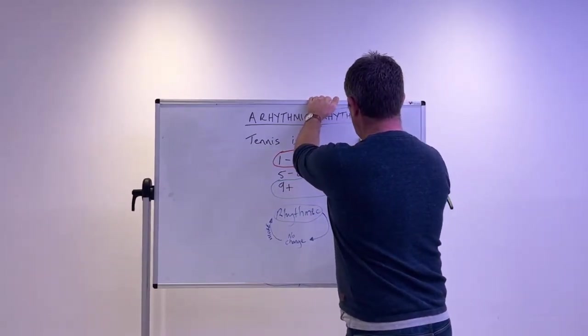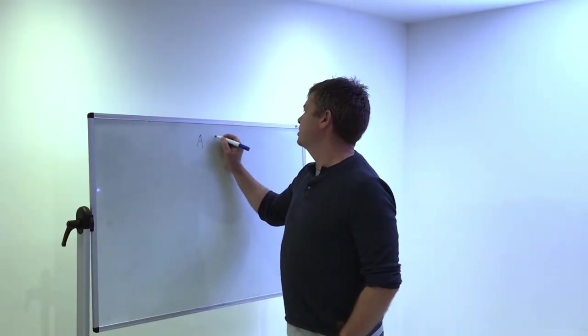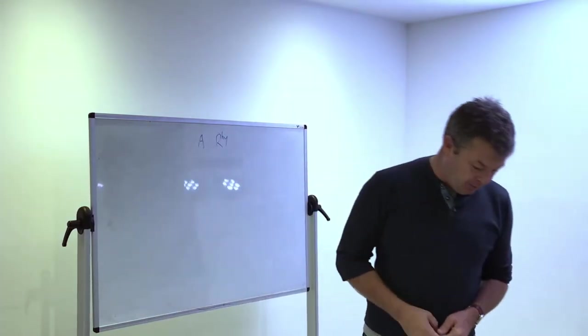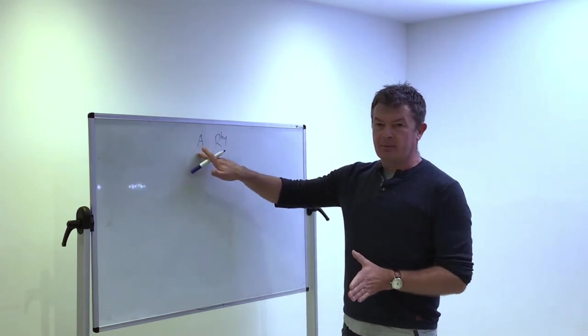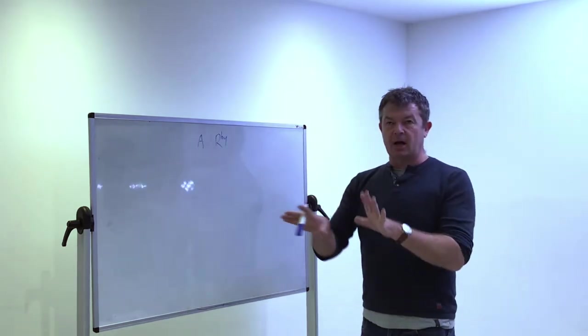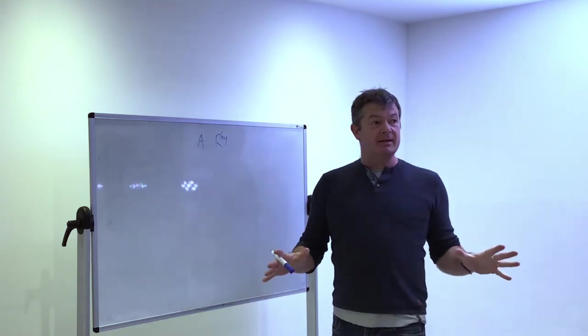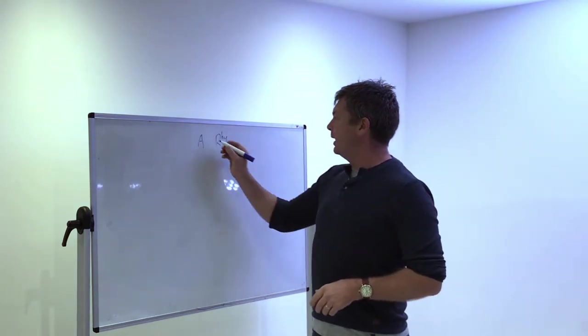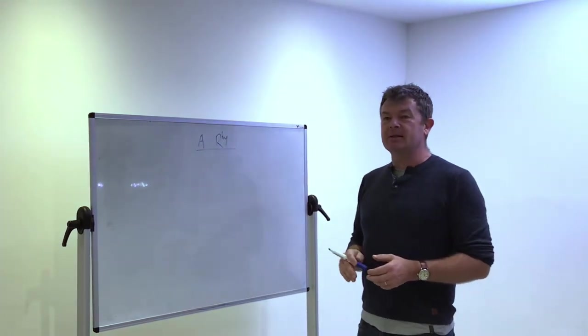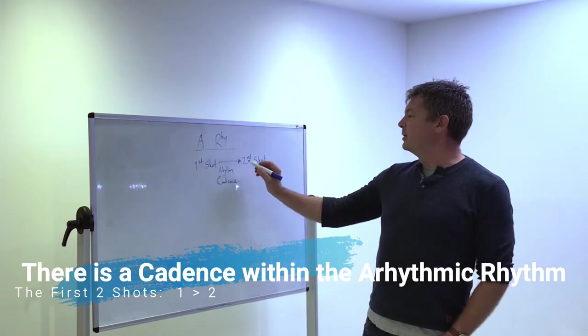So where's the rhythm in the arrhythmic? That's what we're trying to find out. And this is Sterling's work and it's amazing. It really is literally a game changer. So where do we find the rhythm in tennis? And we call that cadence between the first and the second shot.